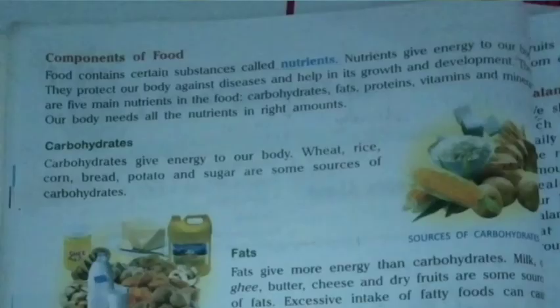Nutrients give energy to our body, as our body needs energy to work. Nutrients also protect our body against diseases and help in growth and development. There are five main nutrients in food: carbohydrates, fats, proteins, vitamins, and minerals. Our body needs all the nutrients in the right amount.